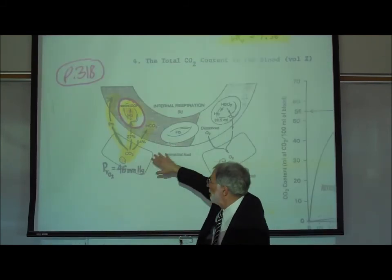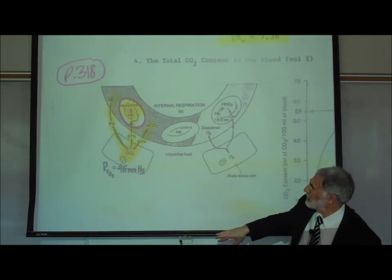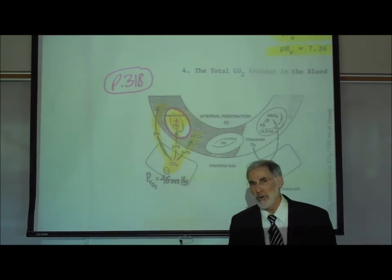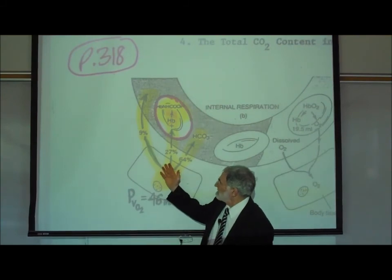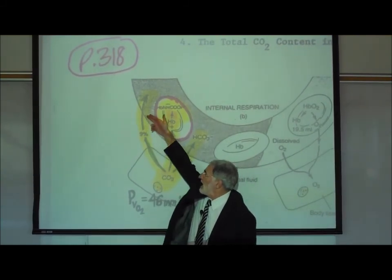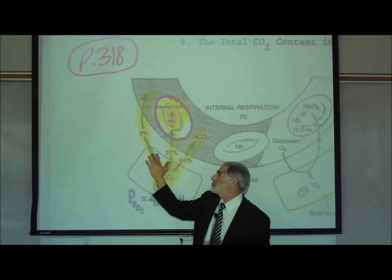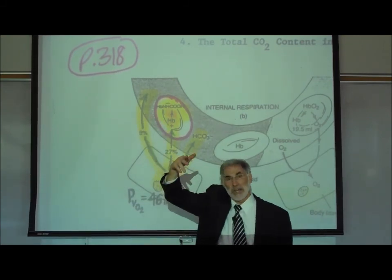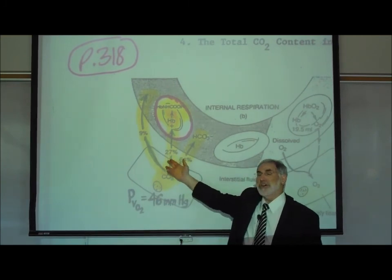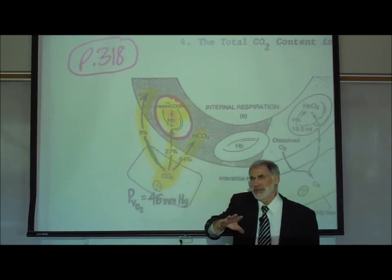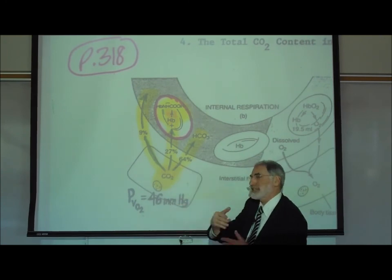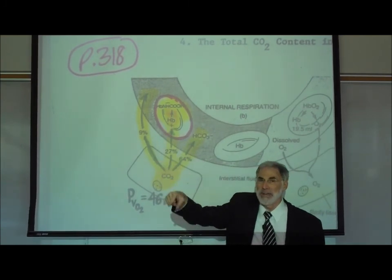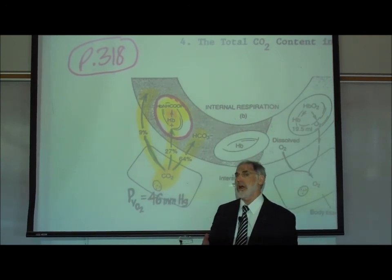Let's summarize one more time. On the lower left of page 318, we see that a small amount of the carbon dioxide given off by tissue cells and entering the bloodstream simply dissolves in the blood plasma. A medium amount of carbon dioxide enters the red blood cell and attaches to the hemoglobin, forming what we call carbaminohemoglobin.